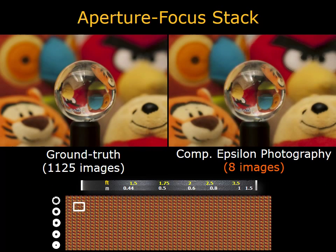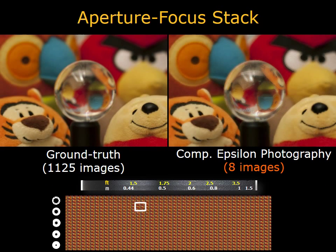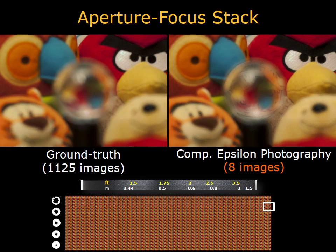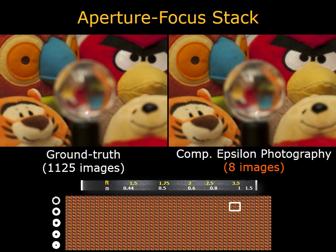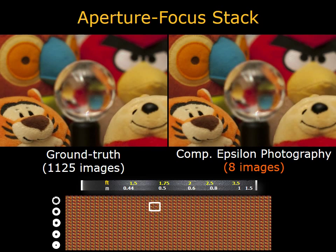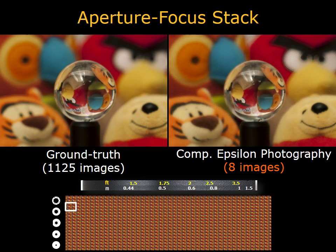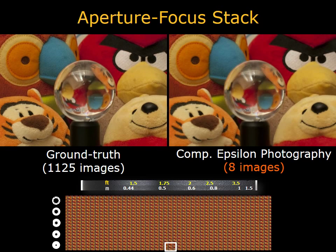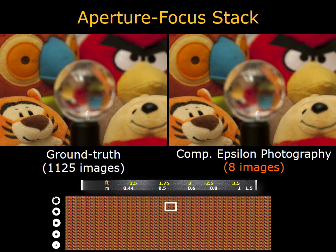We now show subsets of the reconstructed space. First, we vary the focus using a fixed aperture. Notice the change in blur as the focus is varied from near plane to far plane and back. Next, we vary the aperture at a fixed focus. The plane of focus is fixed on Tigger in the middle of the scene.